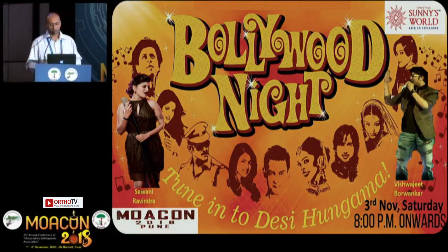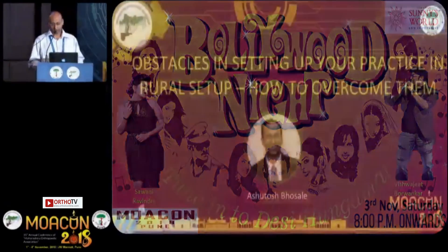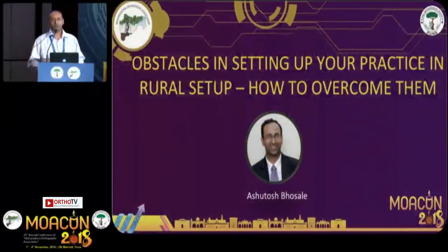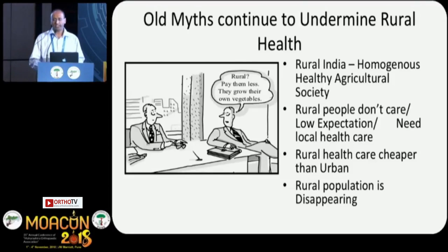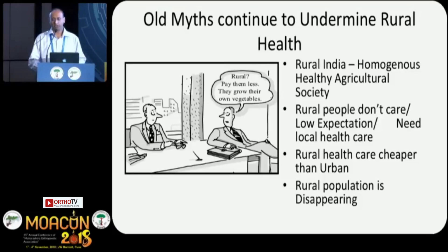As a rural hospital setup, there is another problem of managing these hospitals. There are a lot of myths about it — like it's a homogeneous, healthy agriculture society, that rural people don't care because they have low expectations, that they need only local healthcare, and it should be cheaper because they grow their own vegetables.